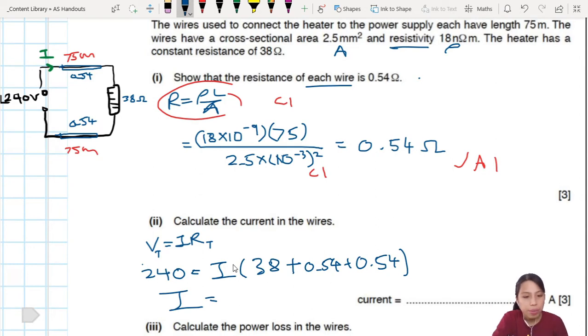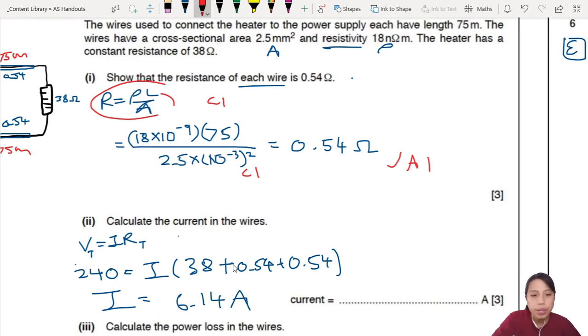So if my VIR here, I'm going to use for V total and R total. So the total potential drop across the wire, the heater and this other wire will be 240, which is also the potential supply. So we have 240 equals to some current and total resistance. So you have the heater, you have one wire and you have another wire. Because they're acting like resistors in series. Don't forget the other two. So calculate your current, you should get 6.14 amps.